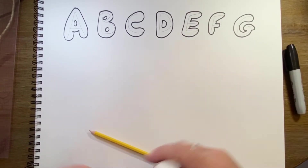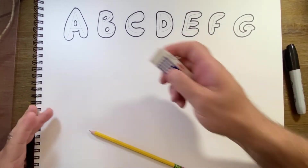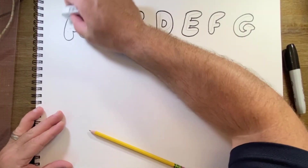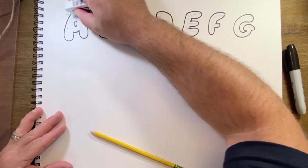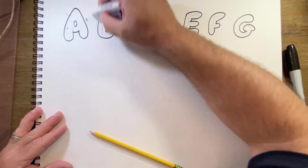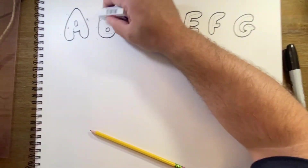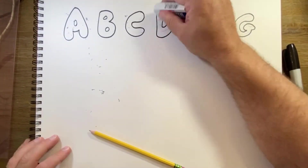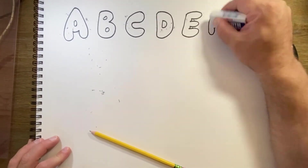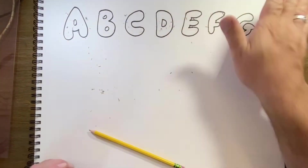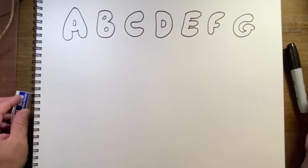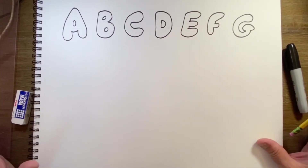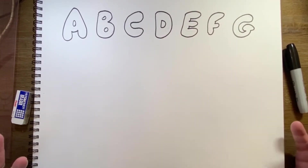Now, before I move on, the next thing I'm going to do is use my eraser to erase the pencil lines. There you have it — some nice bubble letters.